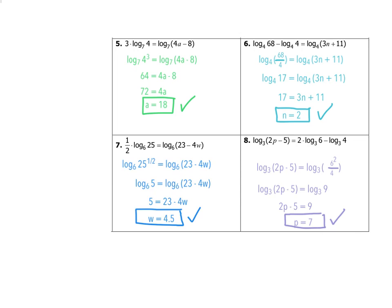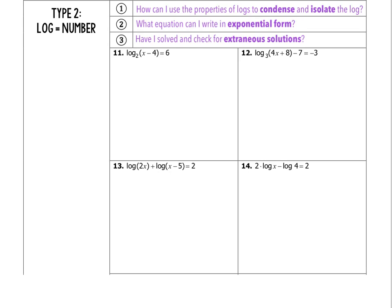Look over examples 1 through 8 and write down any questions or points of confusion to discuss in class. The second type we're going to look at is when I have a log equals a number. We'll have basically the same process: use the properties of logs to condense and isolate the log, then use exponential form to write the equation, and always check for extraneous solutions.